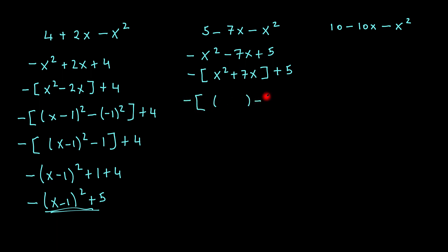So I open the two curved brackets and put a square around those brackets. Put a plus 5 out here. Now bring my x down, keep that sign which is plus, bring that down, half the 7 — in other words, divide it by 2, so it'll be 7 over 2. So this would be 7 over 2 all squared plus 5.